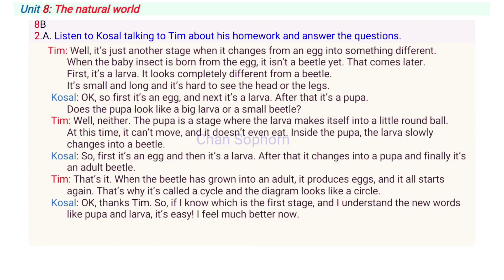That's it. When the beetle has grown into an adult, it produces eggs. And it all starts again. That's why it's called a cycle. And the diagram looks like a circle. OK, thanks. So, if I know which is the first stage and I understand the new words like pupa and larva, it's easy. I feel much better now.